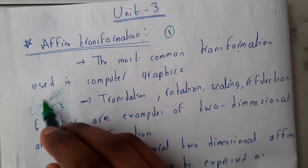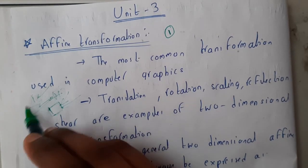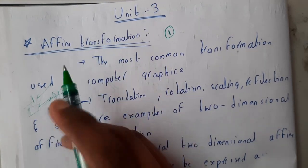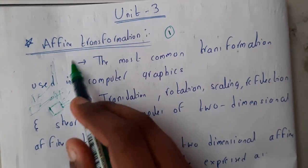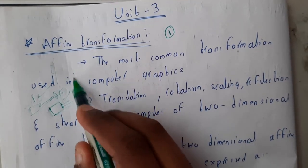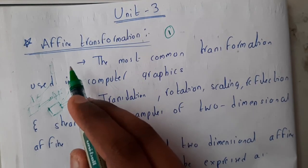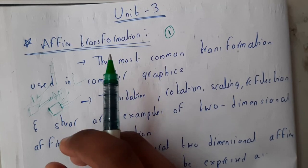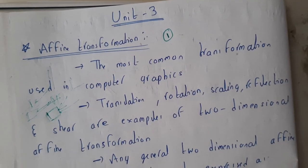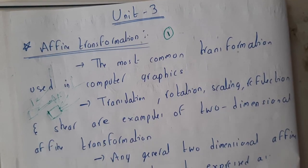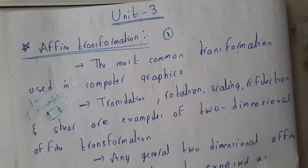We can rotate the object according to some particular angle — that is nothing but rotation. We can decrease or increase the size of the object — that is nothing but scaling. We can have a mirror image of the object — that is nothing but reflection. And we can have shearing, which is nothing but some random elaboration or compression of your object in one particular direction or angular way — not like scaling, which is uniform and in all directions.